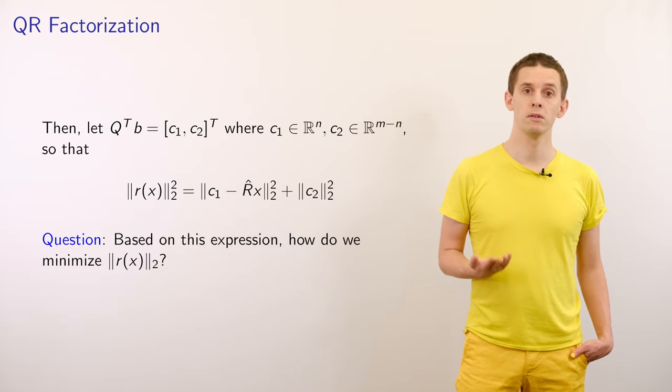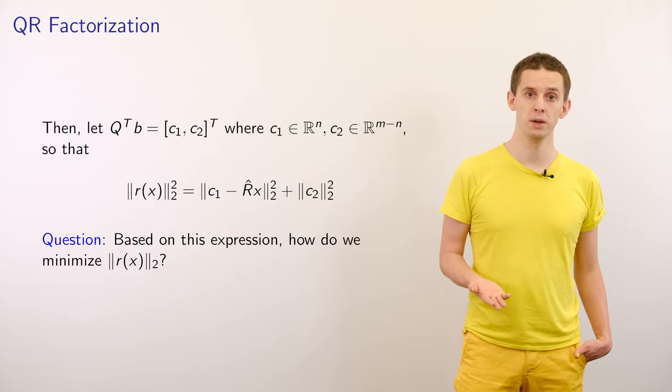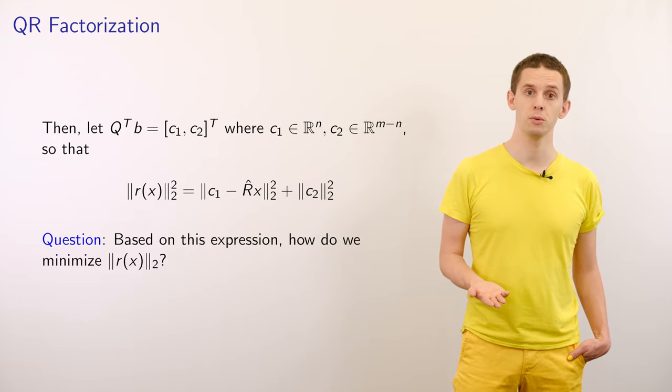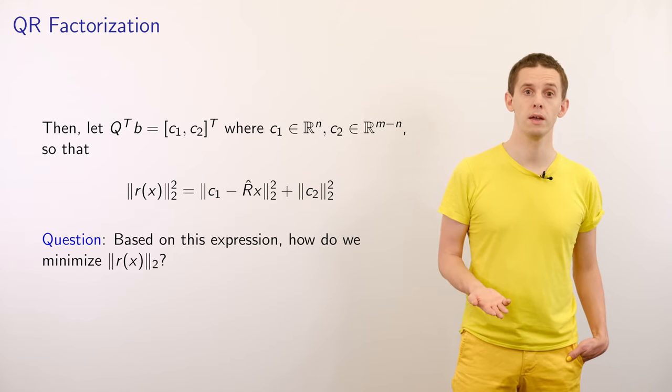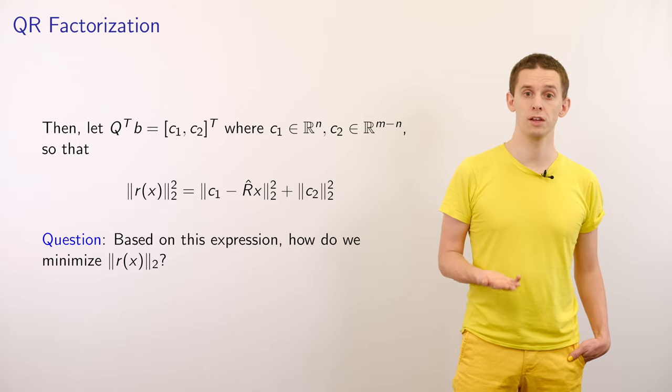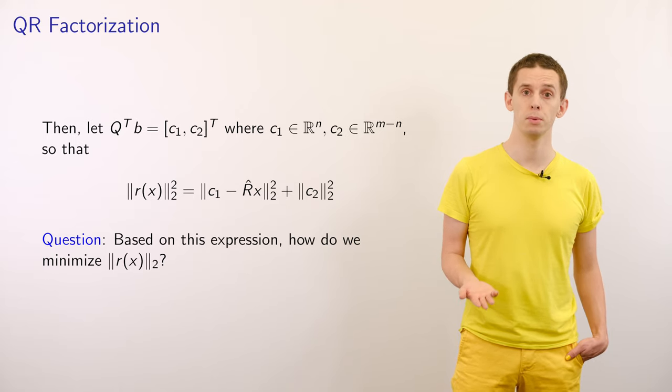Now let's write Q transpose B in terms of two parts, C1 and C2. C1 contains the first n components, and C2 contains the remaining M minus N components.